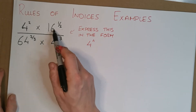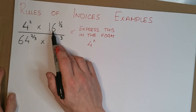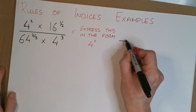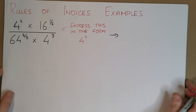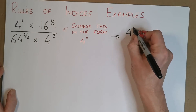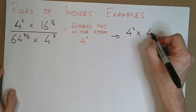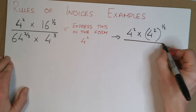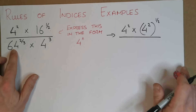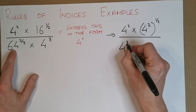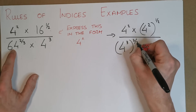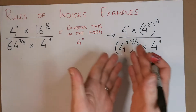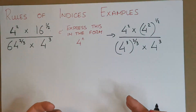The first thing I'm going to do is change all these numbers to base 4. What do I mean by that? Well, 16 we know is 4 squared, and 64 is 4 cubed. So let's do that over here. We have 4 squared multiplied by 16, which is 4 squared, all to the power of one half, over 64 which is 4 cubed, to the power of two thirds, and then 4 cubed. So I've changed all the 16s and 64s — everything is now 4 to the power of something.